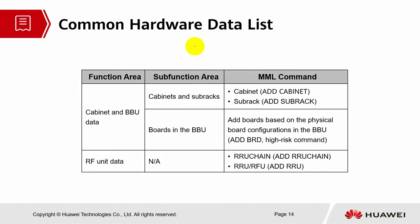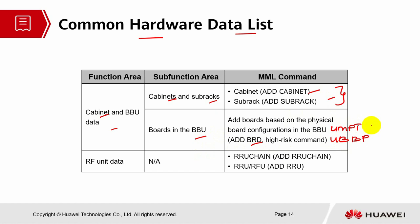Let's look into the common hardware data list. We have cabinet and BBU data — we need to add cabinet and subrack. This is by default the command, so most of the time for the first base station it will be configured by default; for the remaining ones we have to configure. For the boards in the BBU: the main board, usually mandatory, we need to add the UMPT board and UBBP board — these are the mandatory boards that need to be added inside a BBU. For the RF unit data, we need to add the RRU chain, which is related to the fiber connection, and we need to add the RRU module depending on how many RRU modules we have configured.